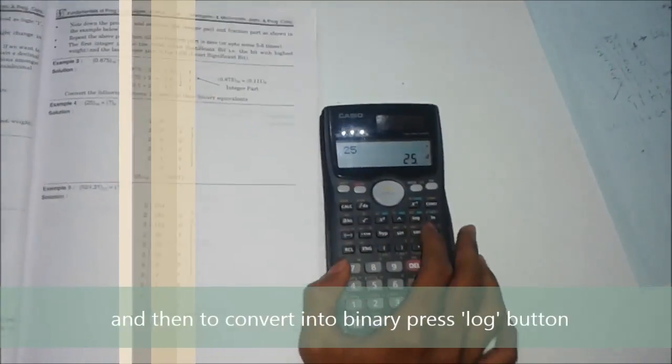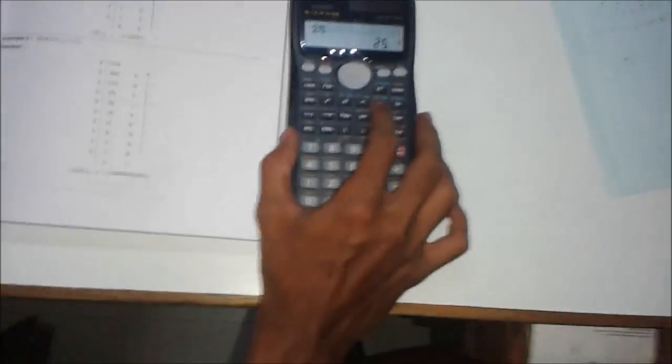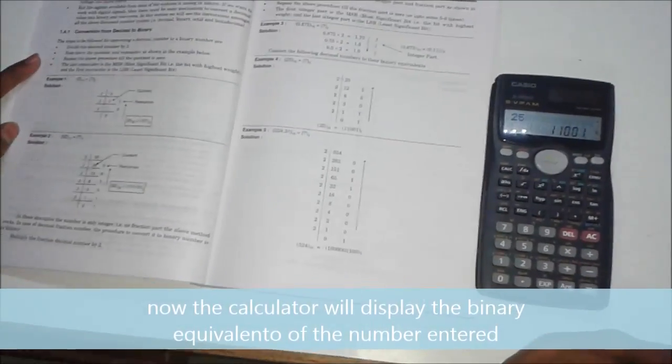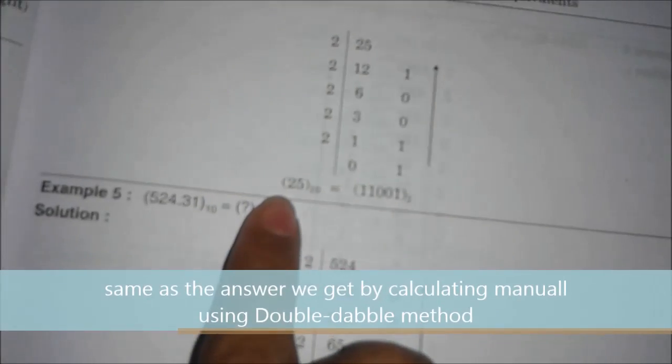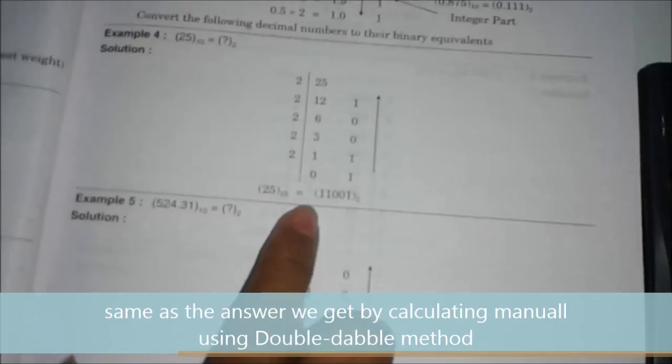To convert into binary, just press the log button. You can see BIN is written above it. By pressing log, it will convert into its binary equivalent form, that is 11001. In this example also, using the conversion, it is converted into its binary equivalent form 11001.